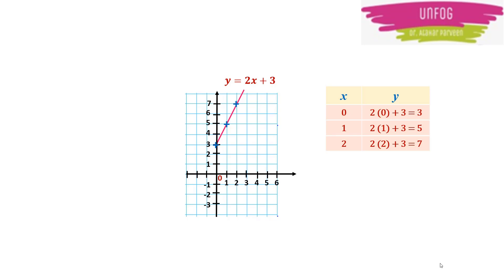That is equal to 7. So the final values are: for x = 0, y = 3; for x = 1, y = 5; and for x = 2, y = 7. Now that we have the values of x and y together, we plot these three points by putting the values of x and y in the graph.